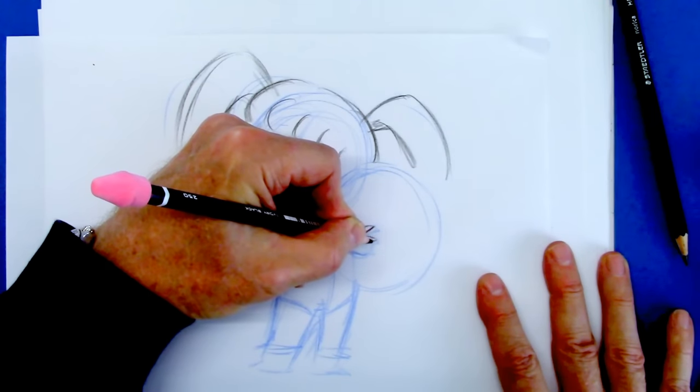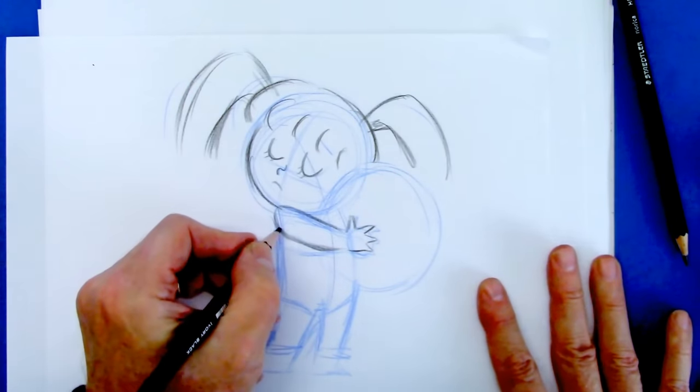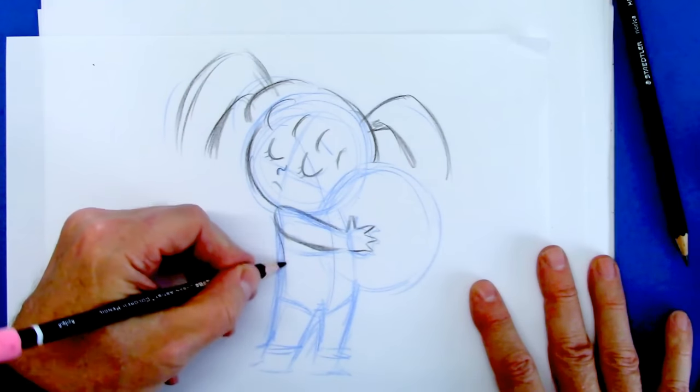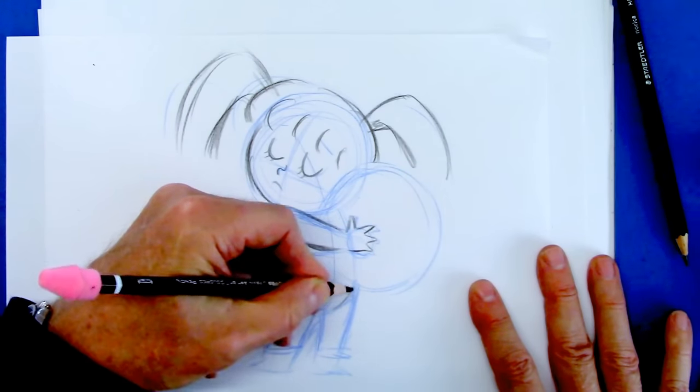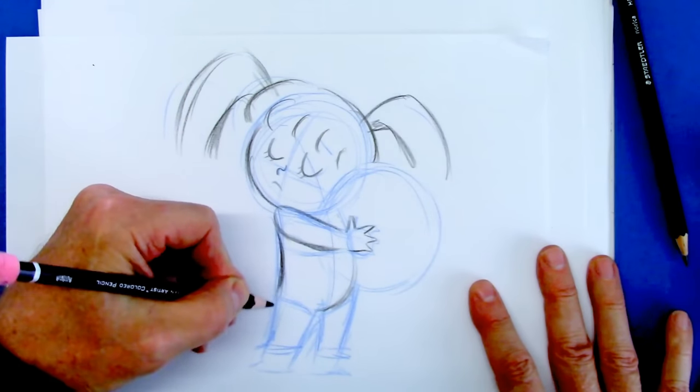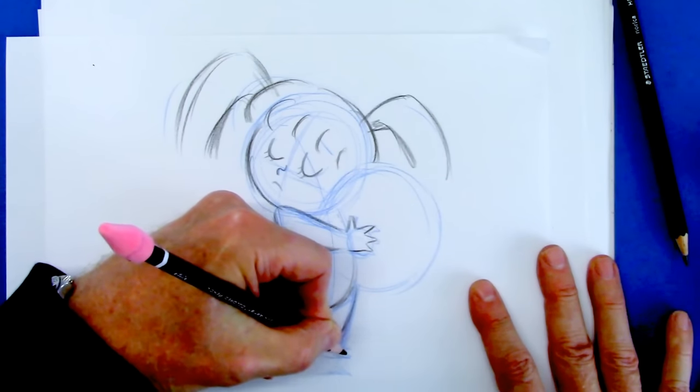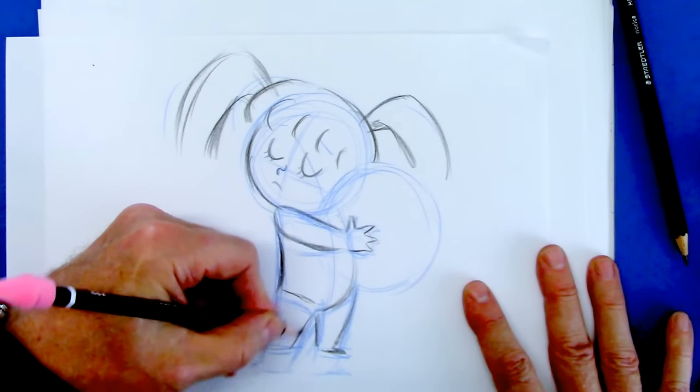And spread the fingers, these chubby little hands, like so. See how this goes here like this. It's really a part of the whole line of action, sways in that direction. And see how I made the feet smaller here. It just made her cuter.